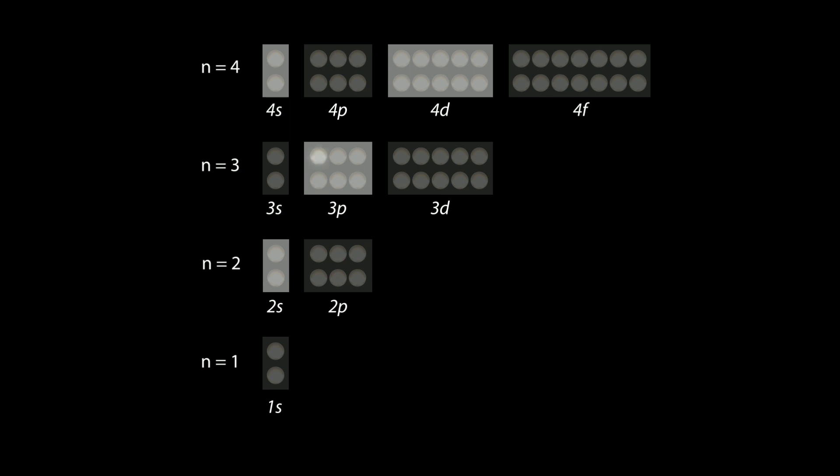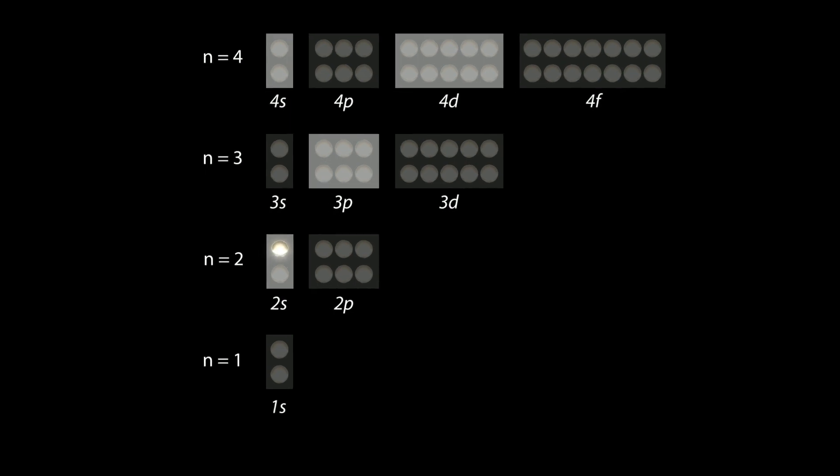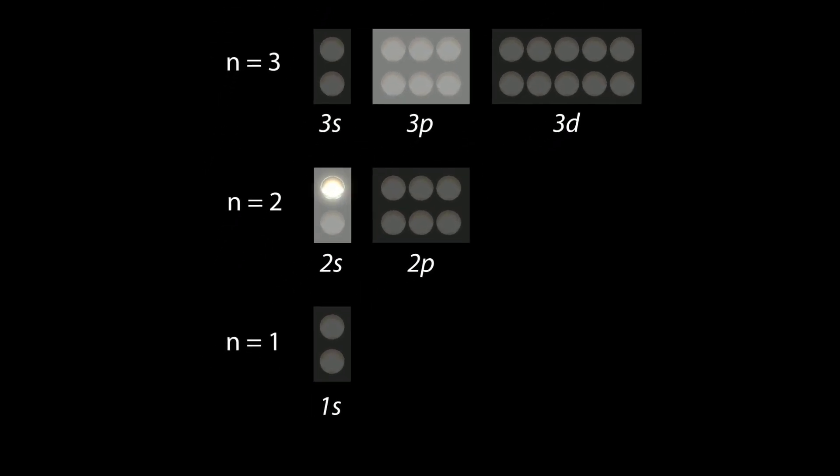An electron in the P orbital can emit a photon only by changing the orbital. For example, during the transition from 3P to 2S. These movements along the diagonal line are possible, while all other movements are forbidden. For example, a transition from 2S to 1S is forbidden. These are the so-called selection rules.